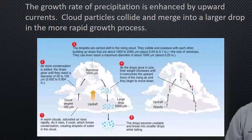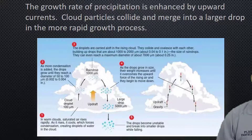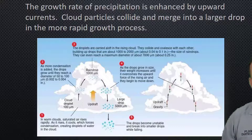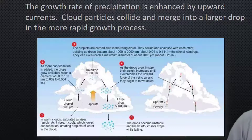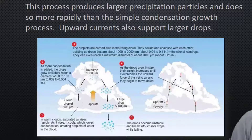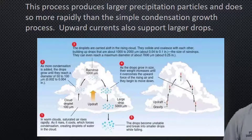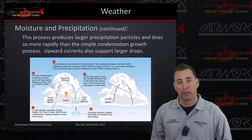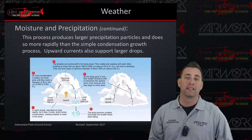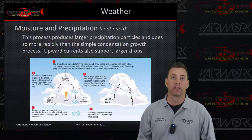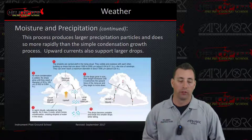The growth rate of precipitation is enhanced by upward currents. Cloud particles collide and merge into larger drops in a more rapid growth process. As you look at this picture, you can see that as we have updrafts, the air cools down, the water is able to condense, and it also impacts with other water to grow bigger droplets, thus creating clouds. This process produces larger precipitation particles more rapidly than simple condensation growth. Upward currents also support larger droplets because the updrafts push water up, resisting gravity, holding water nuclei in the air longer until they get too big and fall as rain.